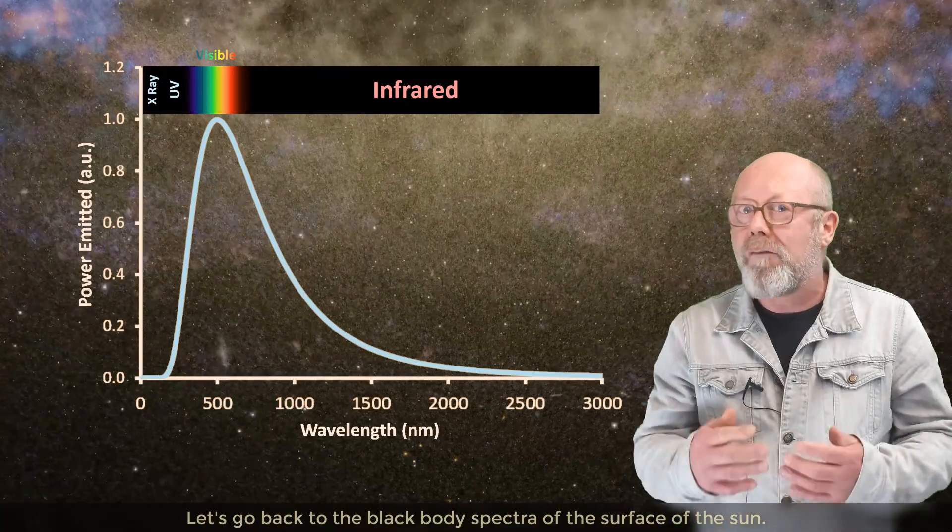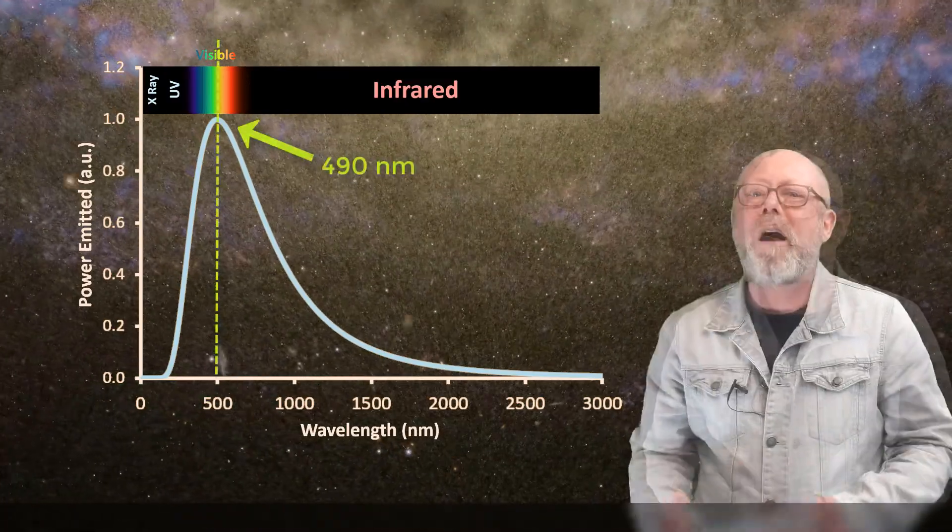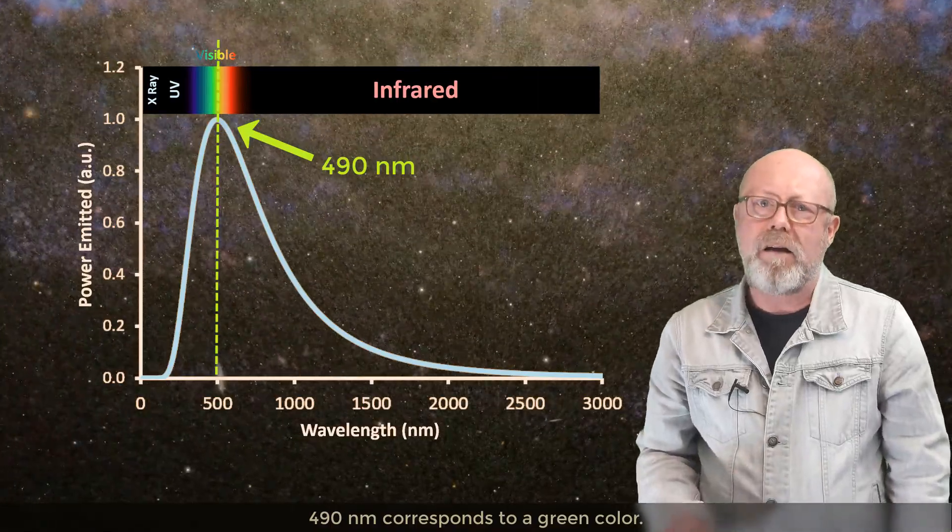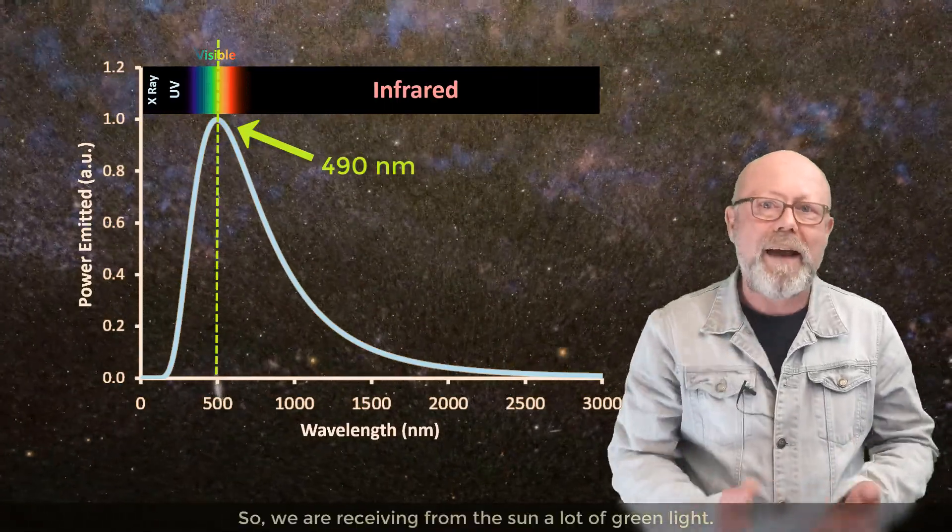Let's go back to the black-body spectra of the surface of the Sun. Now, 490 nm corresponds actually to a green color, so we are receiving from the Sun a lot of green light.